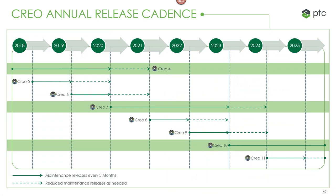As a high-level overview of the Creo roadmap: we've moved to yearly releases, with a major release every third one. Creo 4 was a major release, then Creo 5 and 6 for those who want new improvements yearly. Creo 7 will be the next major release with a lot of planned functionality. Then 8 and 9 will be more minor releases, followed by 10 and so on.